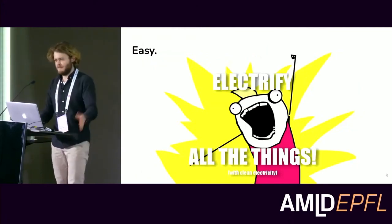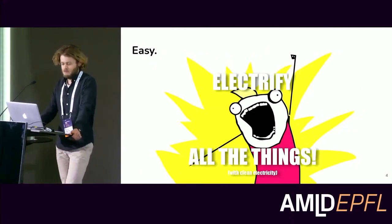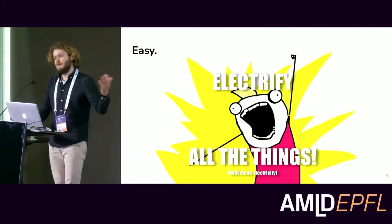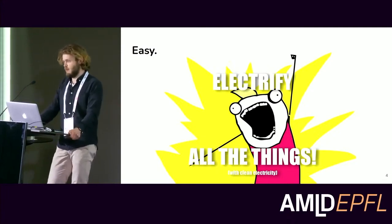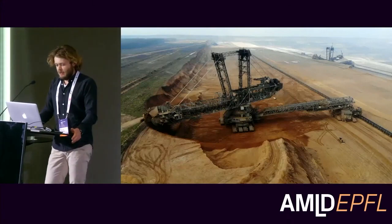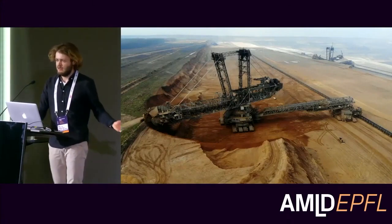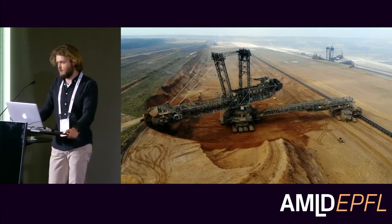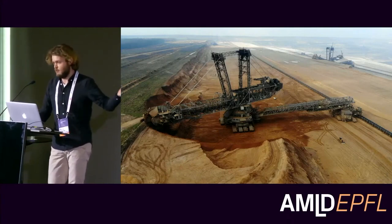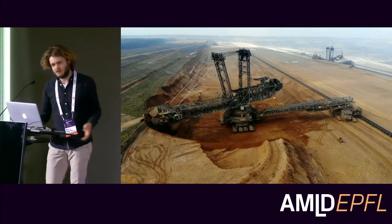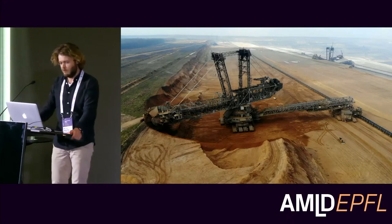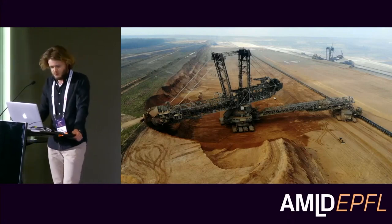We often hear the narrative that the easy solution forward is just to electrify everything. That's a good idea, but it has to be done the right way — with clean electricity — and that's not necessarily the case at all times. A picture can be worth a thousand words: this is currently the biggest machine that humans have ever created, a coal excavator that is used to this day in Germany to extract coal that is then burned, releasing a lot of CO2 into the atmosphere.